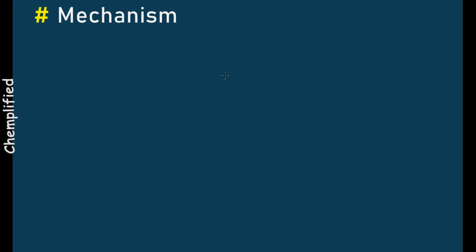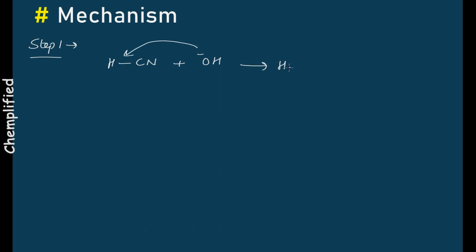Let's look at the mechanism. Since this is a base-catalyzed reaction, the first step is that hydrogen is removed from HCN using a base. The OH base attacks the hydrogen, takes out a water molecule, and gives you the nucleophile CN negative — the cyanide ion.